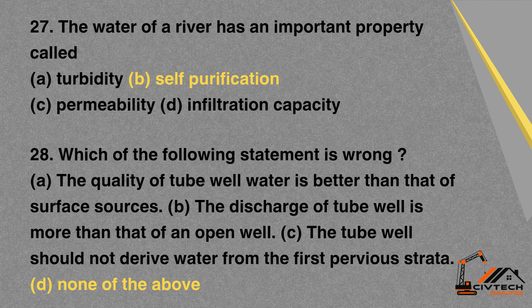MCQ 28: Which of the following statement is wrong? A. The quality of tube well water is better than that of surface sources. B. The discharge of a tube well is more than that of an open well. C. The tube well should not derive water from the first pervious strata. D. None of the above. Correct option: D. None of the above.